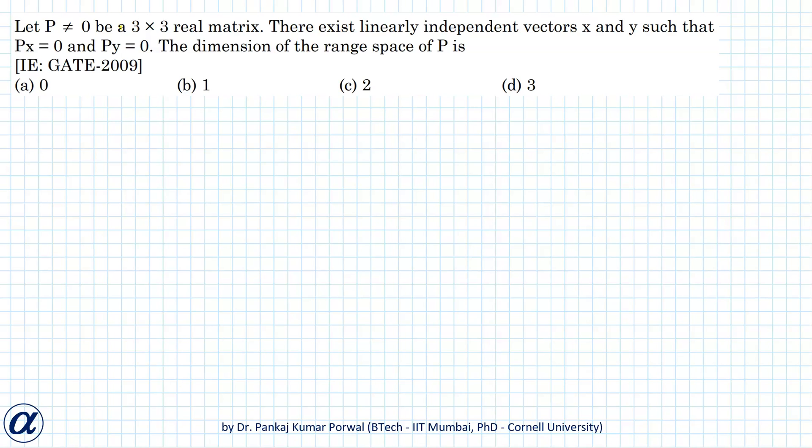In this question, we are given a 3 by 3 real matrix P not equals to 0, and we are also given that there exist linearly independent vectors x and y such that Px equals 0 and Py equals 0, and we want to find the dimension of the range space of P.